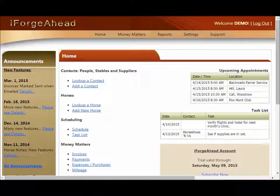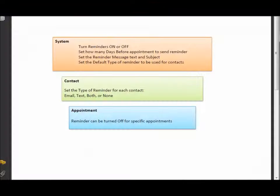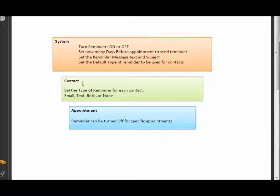Let's begin by looking at the three levels of control you have over the reminder system. At the system level you'll have a number of options that will apply to all reminders that meet your criteria. Below that at the contact level you can set the type of reminder that each of your individual contacts or clients will be receiving.